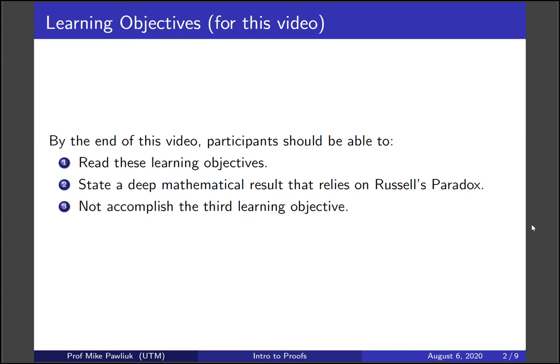You should be able to state a deep mathematical result that relies on Russell's paradox, and you should be able to not accomplish this third learning objective.